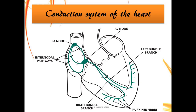To begin with the conduction system of the heart: the SA node is the pacemaker of the heart from where the impulses are generated. These impulses travel down the internodal pathways and are received by the AV node, then passed to the bundle of His, which bifurcates into the left and right Purkinje fibers. This is how the heart contracts and relaxes.